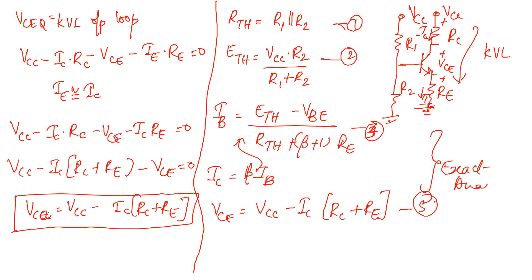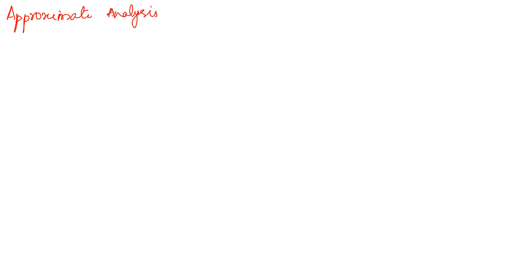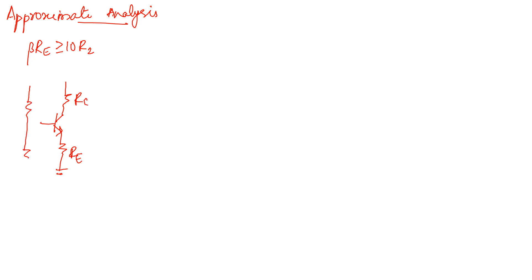Next we look at the approximate analysis. In approximate analysis, you check the condition: if beta into RE is greater than or equal to 10 times R2. This can be applied when beta is approximately a high value, such as 100.